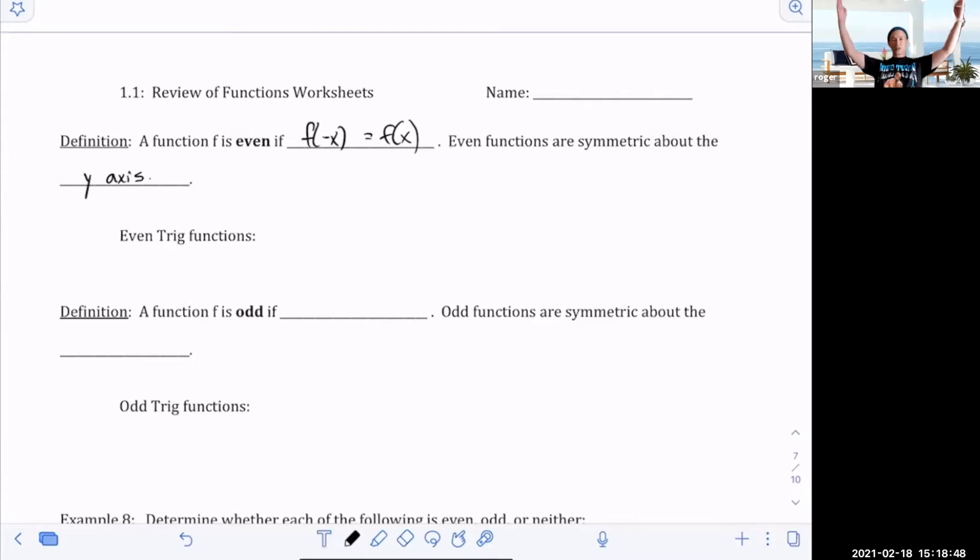When you look at the graph of x squared and x squared looks like this, just imagine this is the y-axis. An even function means when you plug in a negative x for the x, your function remains unchanged.